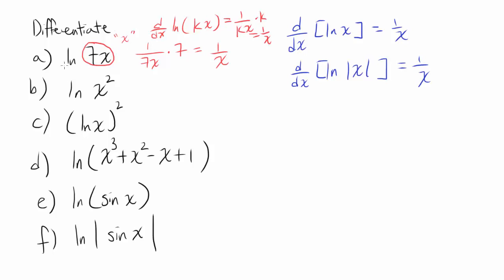In fact, you can show that the derivative of natural log of some constant k times x equals 1 over kx times k, or just 1 over x. So it doesn't matter if it's natural log of 7x or natural log of 2x — in the end, you get 1 over x. Let's look at part b: natural log of x squared.